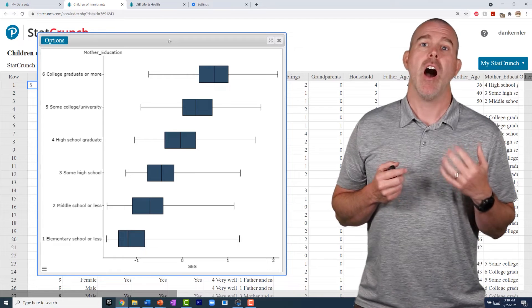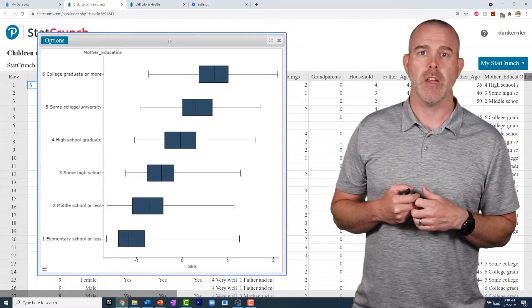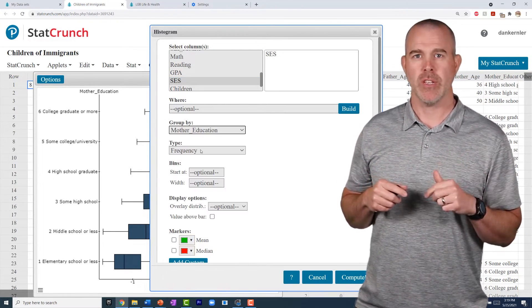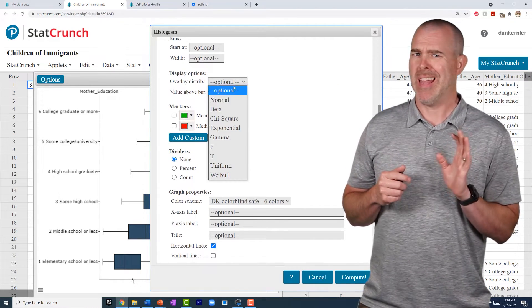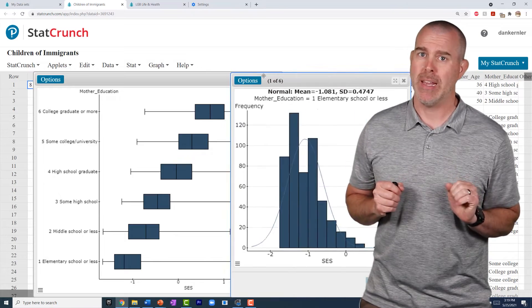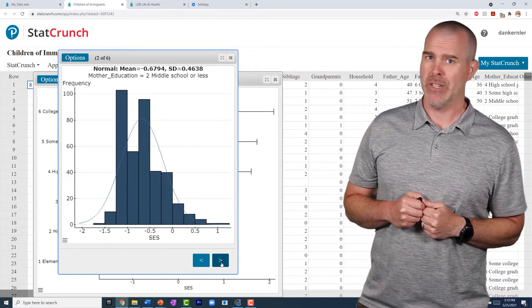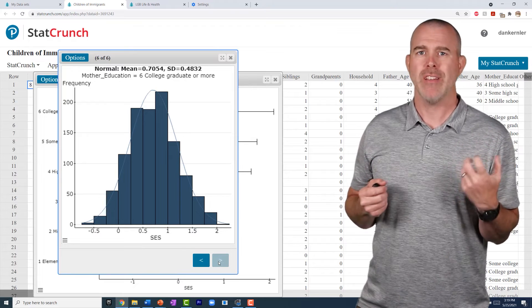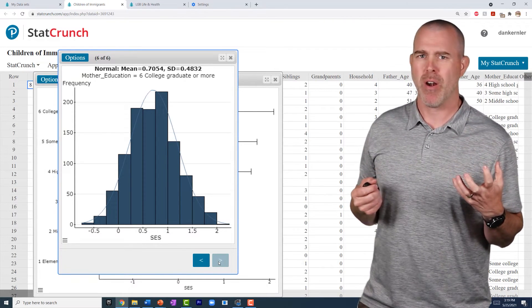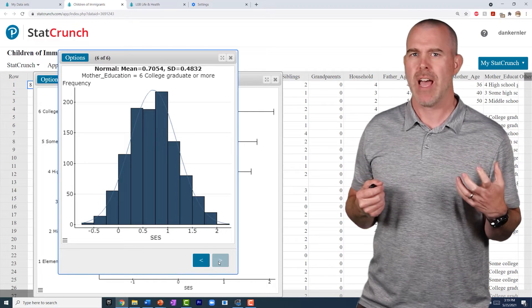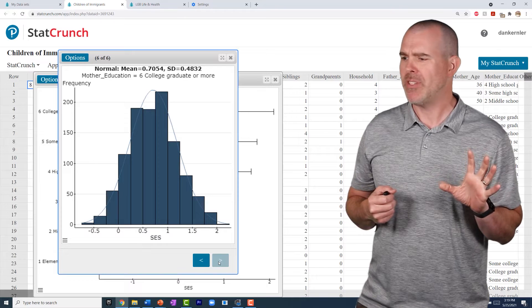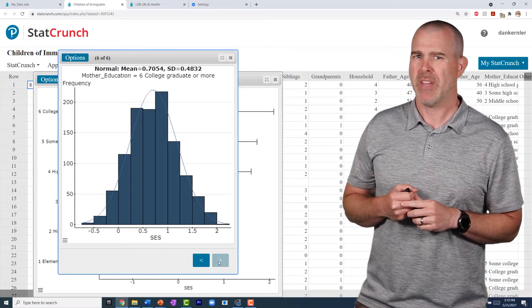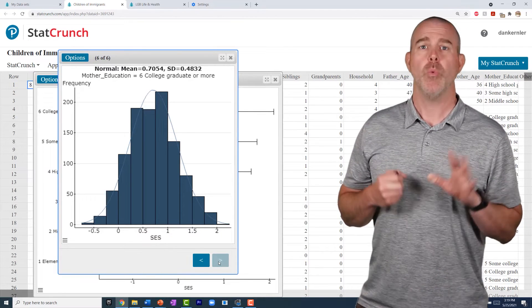The next thing we need to check is, are all of the populations normally distributed? So let's do a histogram. We'll do graph, histogram of SES and group by mother's education, and then take a look at those. And right off the bat, the elementary one is very skewed right, so that's not good. But for the rest of them, they actually look okay, pretty symmetric. In fact, the more education you get, the more symmetric it gets. I think a big part of that is sample size. So what we're going to have to do is leave out those whose mother's education was elementary school or less. We're just going to have to exclude those because that population is not normally distributed.